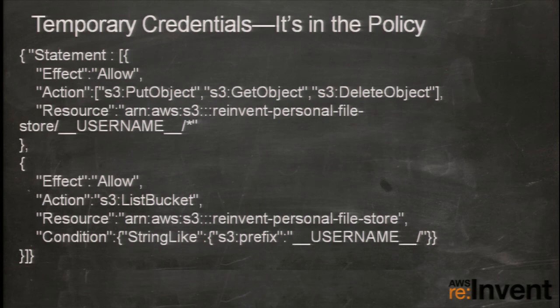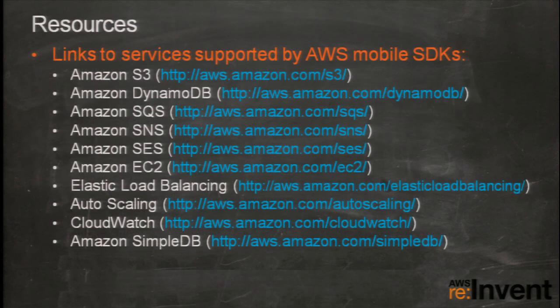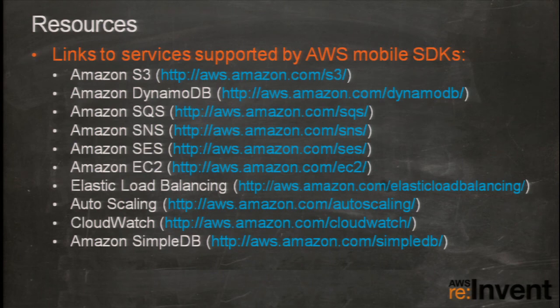The Token Vending Machine uses a service called STS — the Secure Token Service — to create these temporary credentials and apply a policy to them. Those credentials are temporary and you can specify how long they're valid: one to 36 hours. This means if you find a user being malicious, you can stop authenticating them through the TVM, and they won't be able to get new credentials.